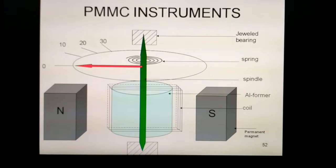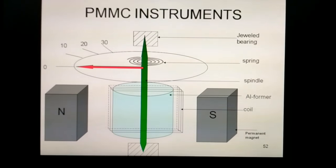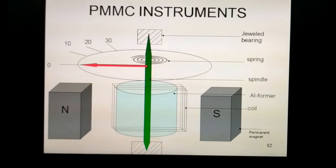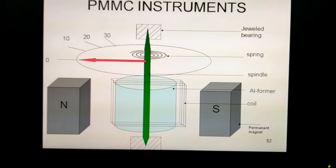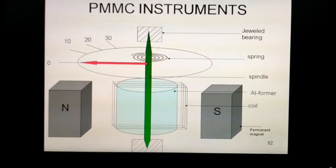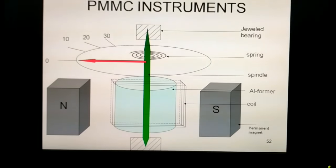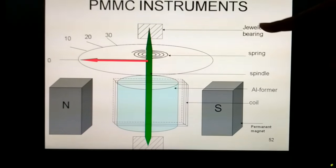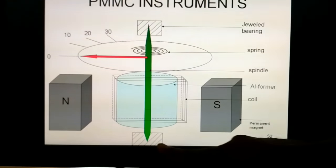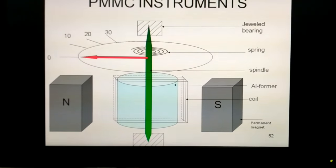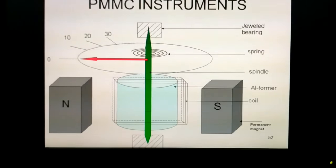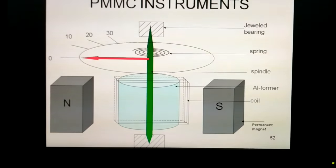The pointer is attached to the green portion, that is the spindle. A spindle is made of somewhat hard material and the pointer is attached to the spindle. The spindle is supported by the jeweled bearings, these bearings here. With the bearing, the spindle is attached and one coil is attached to the spindle.